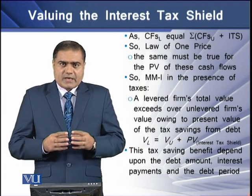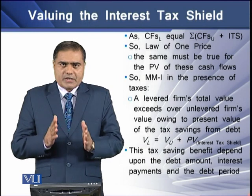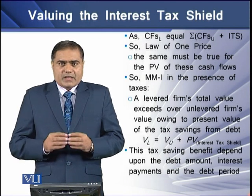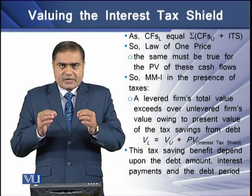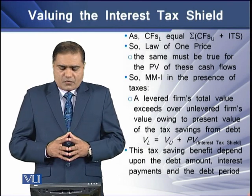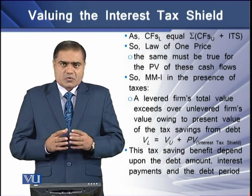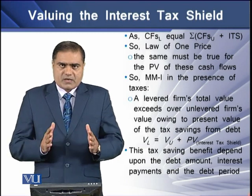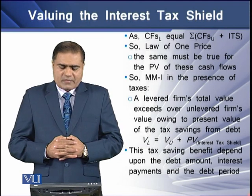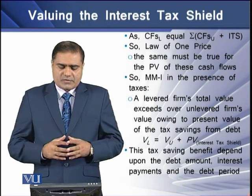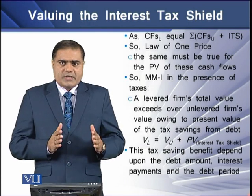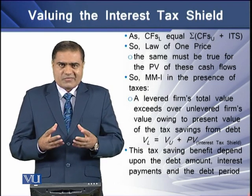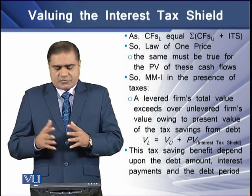The cash flows of a levered firm are equal to the sum of the cash flows of an unlevered firm plus the interest tax shield. The law of one price says that the same must be true for the present value of these cash flows. Modifying the MM1 proposition with the presence of taxes, a levered firm's total value exceeds the unlevered firm's value owing to the present value of the interest tax shield. The value of a levered firm equals the value of the unlevered firm plus the present value of the interest tax shield.